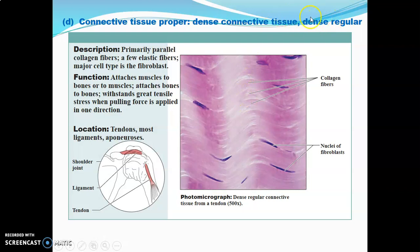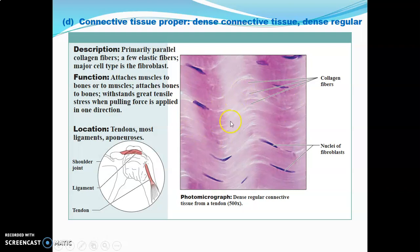Dense regular connective tissue is dense — meaning lots of fibers — and regular, meaning the fibers are arranged parallel to one another. Collagen fibers run parallel, with a few elastic fibers present, and fibroblasts are spindle-shaped with flattened nuclei. Functions include attaching muscle to bone (tendons), attaching bone to bone (ligaments), and withstanding great tensile strength applied in one direction. It is found in tendons, ligaments, and aponeuroses.